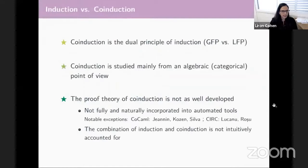So just to put things into context, co-induction is the dual principle of induction. It is essentially the greatest fixed point versus induction being the least fixed point, and it's mainly used for reasoning about co-inductive data types such as infinite streams or trees.